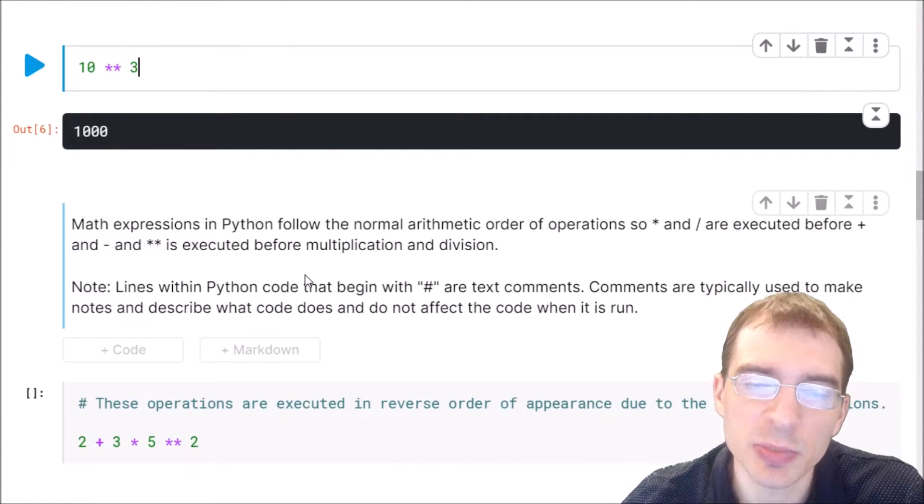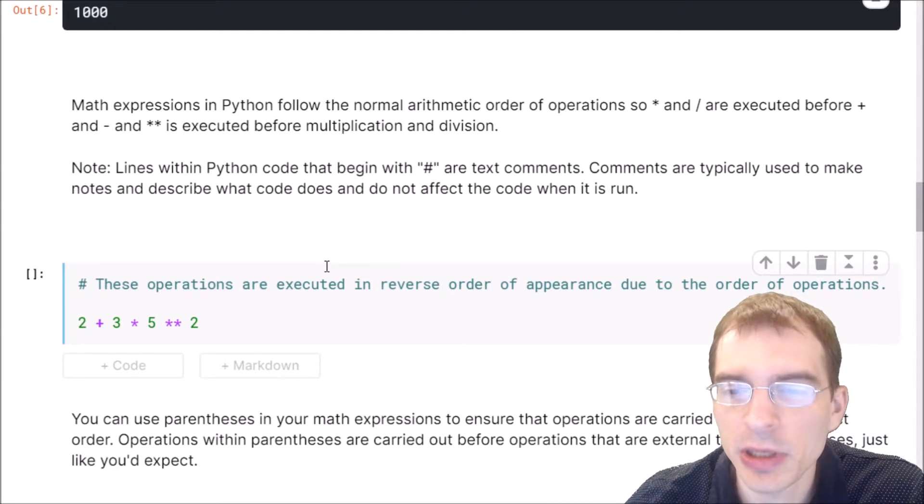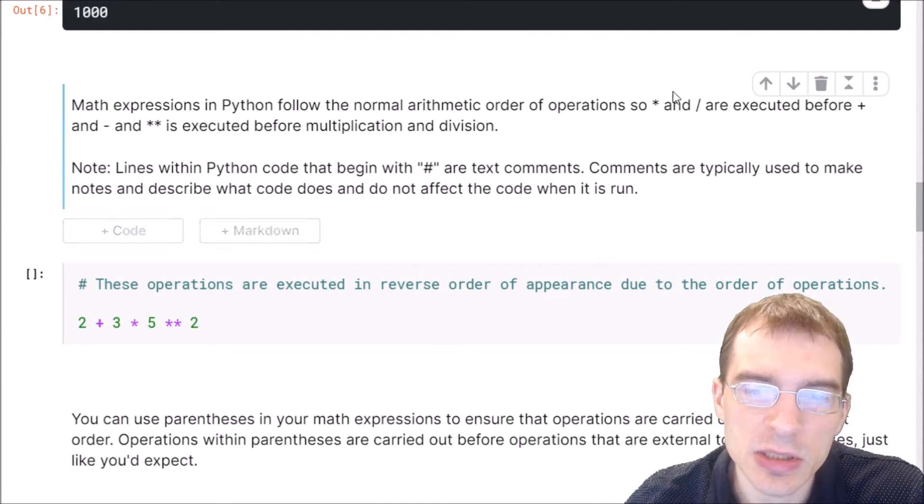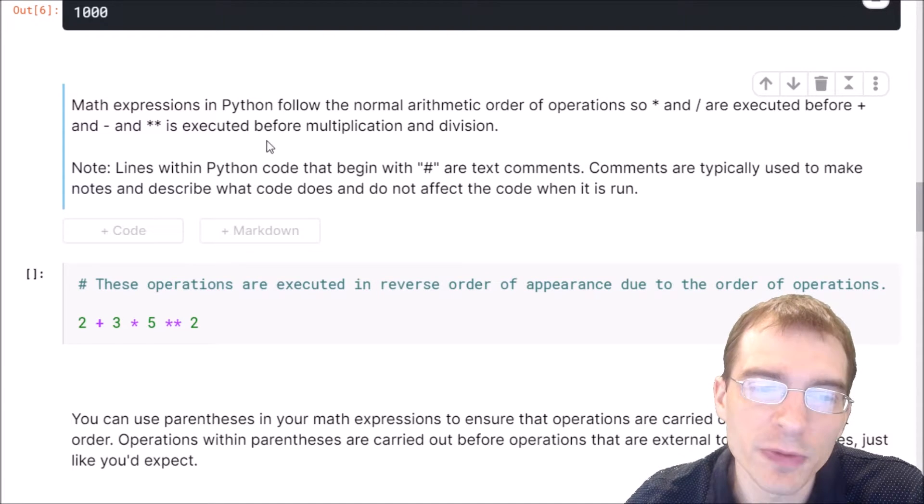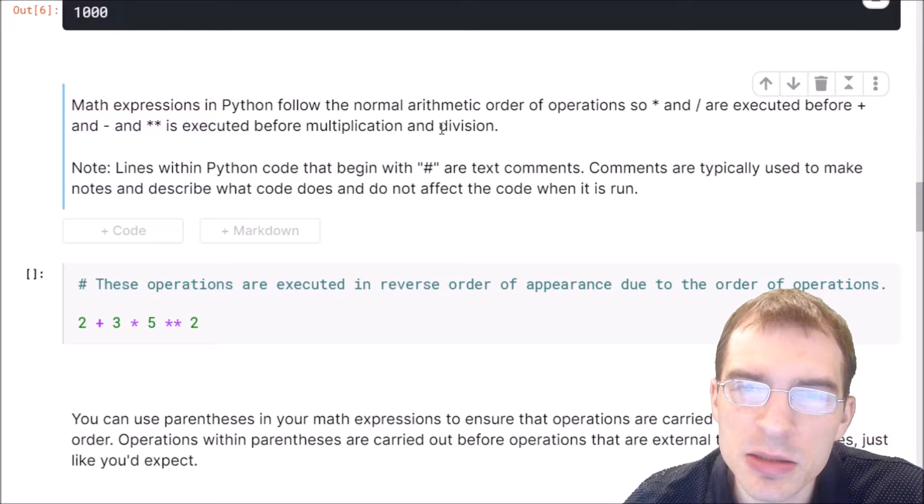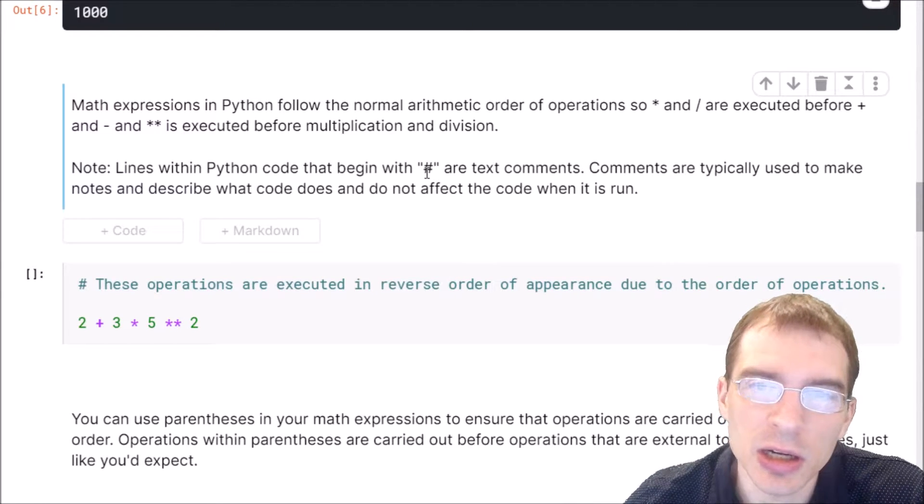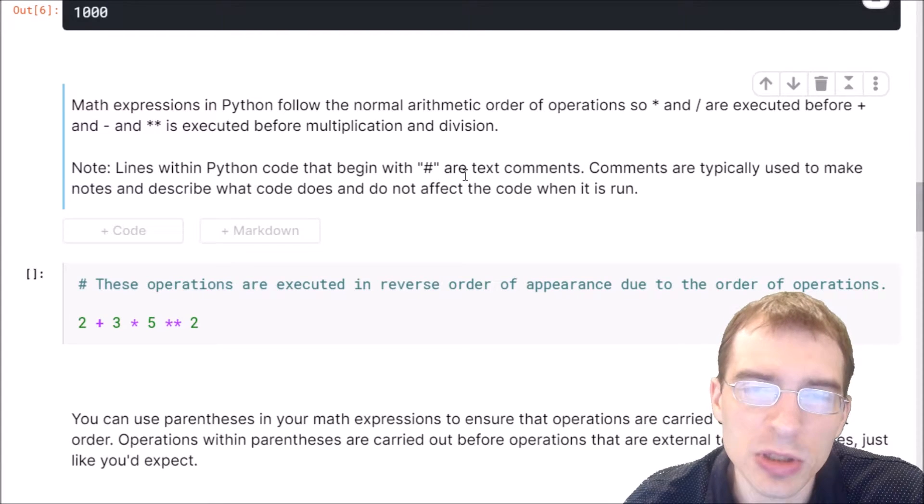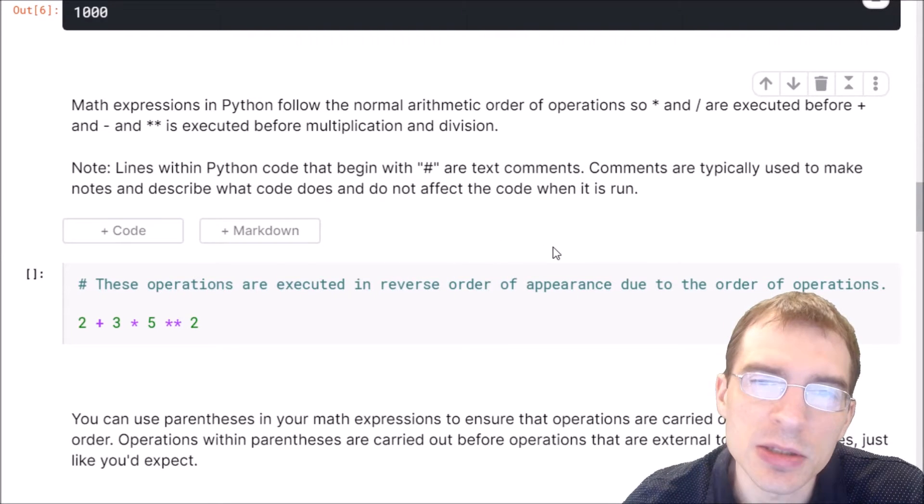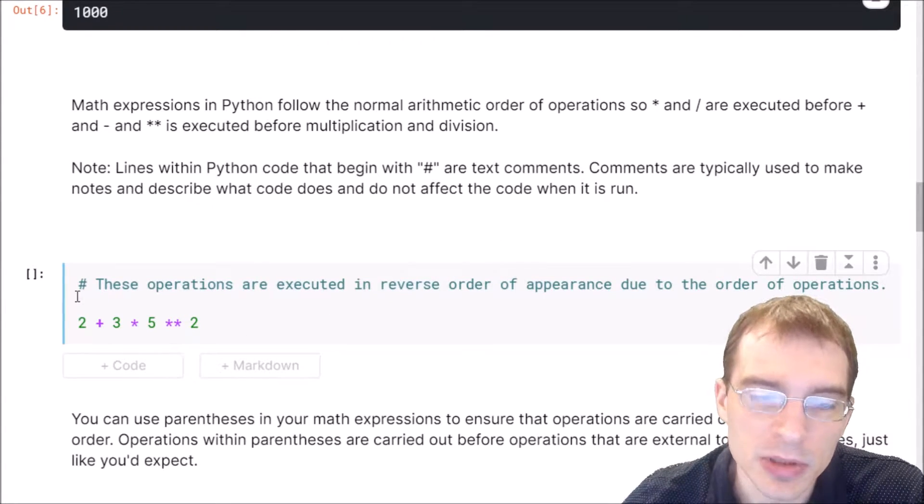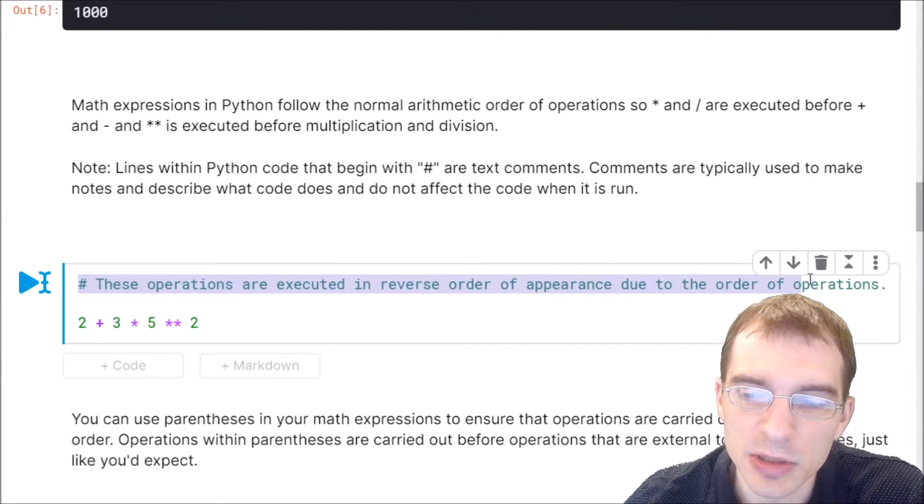It should be noted that math expressions in Python follow the normal arithmetic order of operations. So multiply and divide are executed before plus and minus, and exponentiation is executed before either of those. Also note that lines in Python that start with a hashtag are text comments. Comments are just notes that you can put within your code that don't actually do anything at execution time. In this code cell here, this is a comment saying these operations are executed in reverse order of appearance due to the order of operations.